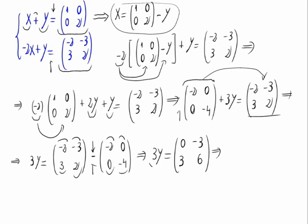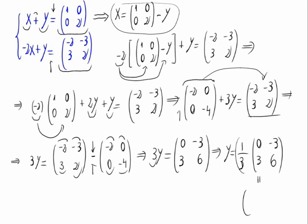This 3 goes to the other side as one-third, so y equals one-third times each element of the matrix: one-third times minus 3 is minus 1, one-third times 0 is 0, one-third times 3 is 1, and one-third times 6 is 2. That would be y.